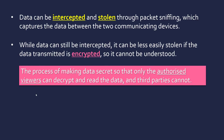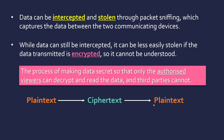Encryption is the process of making data secret so that only authorised viewers can decrypt and read the data, and third parties that aren't authorised can't read it. So it's scrambling up data. You get plaintext — this is the word for your original message — you scramble it in some way to create ciphertext, and then when it's received at the other end, it's decrypted back into the plaintext.